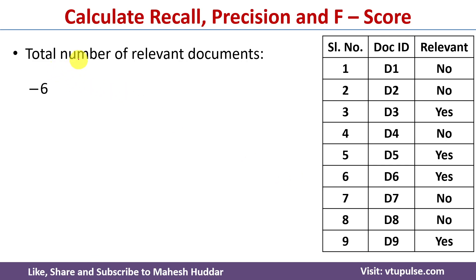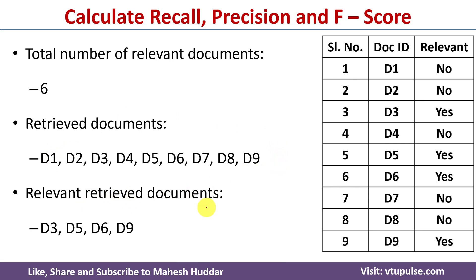Here the total number of relevant documents are 6. Retrieved documents are D1 to D9. Relevant retrieved documents are D3, D5, D6 and D9.